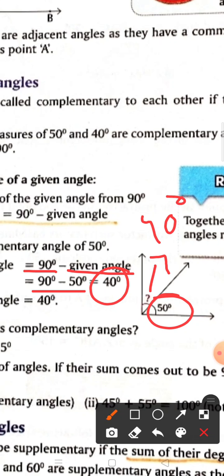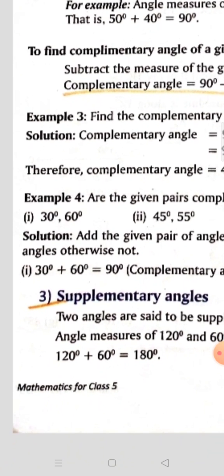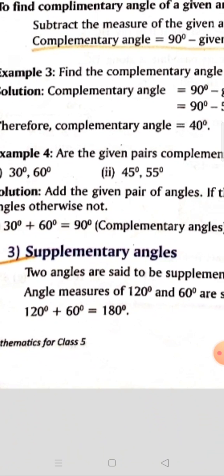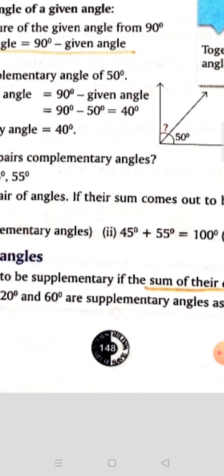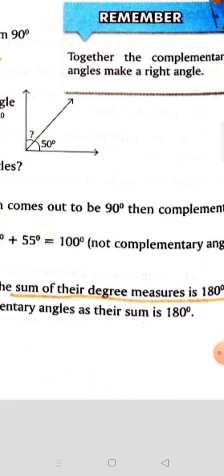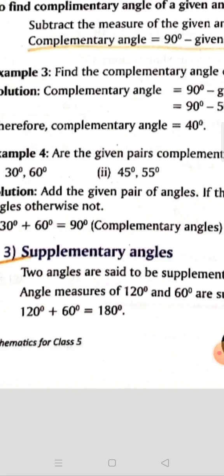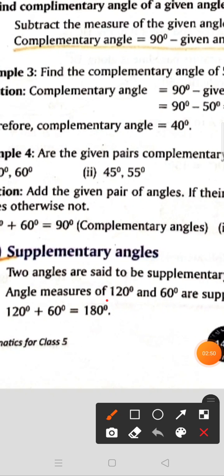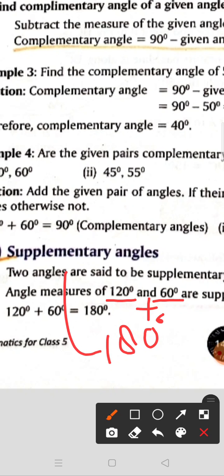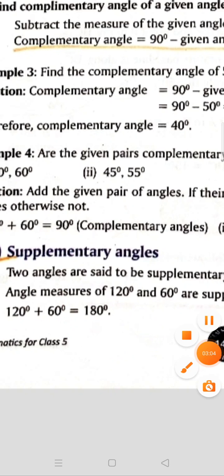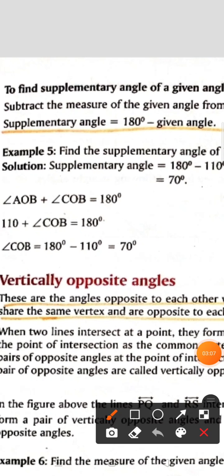Now, supplementary angles. Two angles are said to be supplementary if the sum of their degree measures is 180 degrees. If you add two given numbers and get 180 degrees, then it is supplementary, otherwise not. The formula for finding the supplementary angle is: 180 degrees minus the given angle.